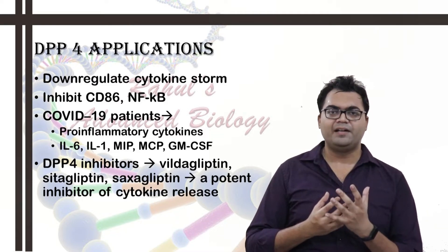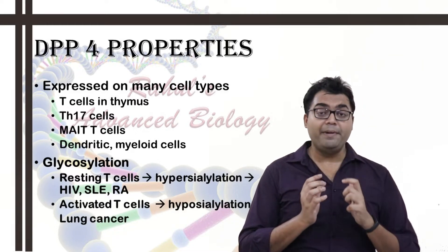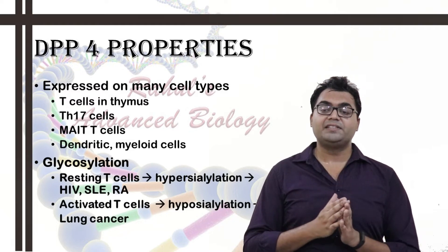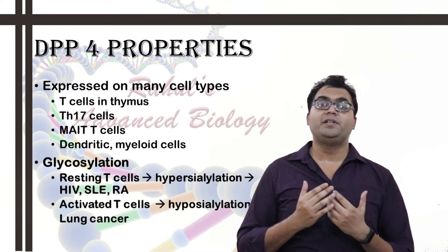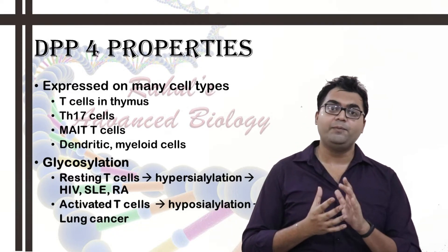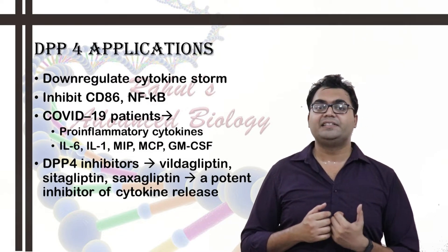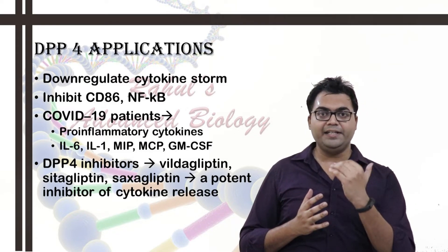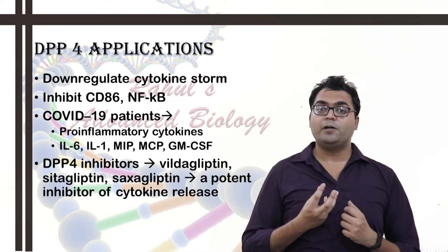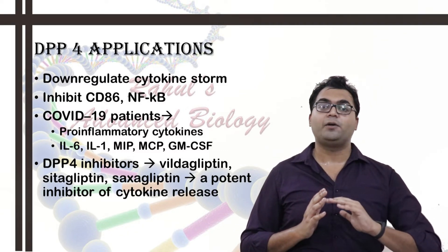DPP-4 has also been observed to be expressed in high amounts in T helper 17 subtype cells, and also in MAIT cells — mucosal associated invariant T cells. A lot has to be discovered through research in order to conclude what is the real effect of DPP-4 in the immune response. But DPP-4 inhibitors like Vildagliptin, Sitagliptin, and Saxagliptin — used in diabetes — have been found to attenuate those immune responses and have a positive effect. These specific incretin analogues or inhibitors could be used in diabetics suffering from COVID-19 to mitigate cytokine response issues.